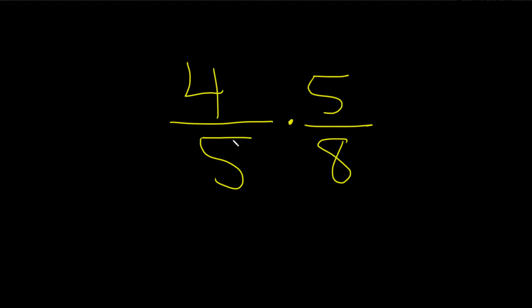5 goes into 5 one time, so you can put a line through the 5 and put a 1 here. Put a line through the 5 and put a 1 here.